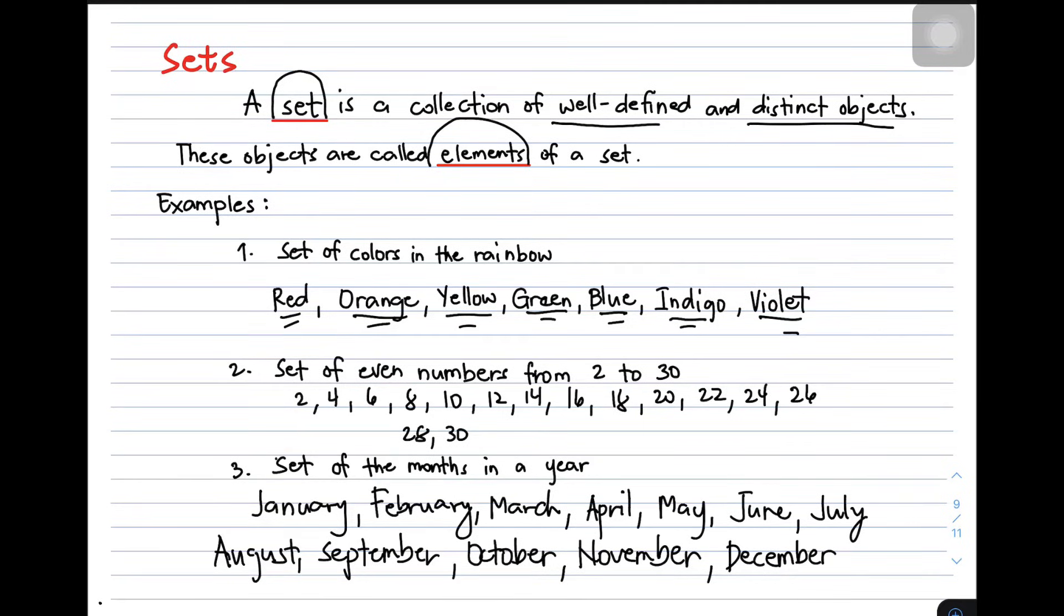This set has 12 elements. Again, we know that one year has only 12 months. Therefore, distinct and well-defined is our example number 3. Again, our number 1, number 2, number 3 are examples of sets.